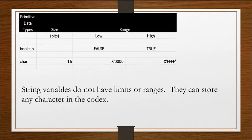So in this table, we see that a Boolean has either a low state of false, meaning it's turned off or zero, and a high state of true. And the character or the char has 16 bits, but really it could fit any number of characters that are in a language. String variables do not have limits or ranges, but they can store any character in the codex, and codex is just all the characters in the language.